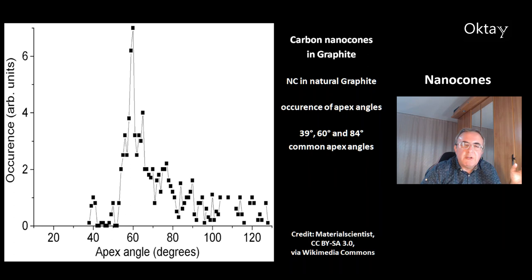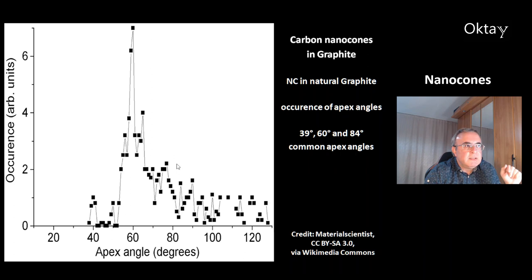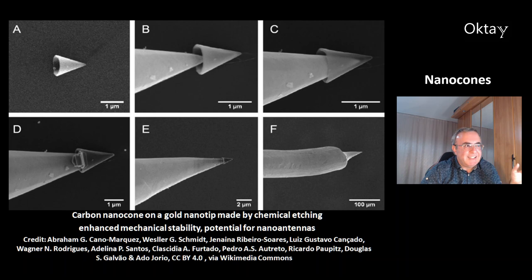This is an occurrence of nanocones in graphite. Natural graphite contains carbon nanocones. The y-axis shows the occurrence and the x-axis shows the apex angles. Common angles are 39 degrees, 60 degrees, and 84 degrees.